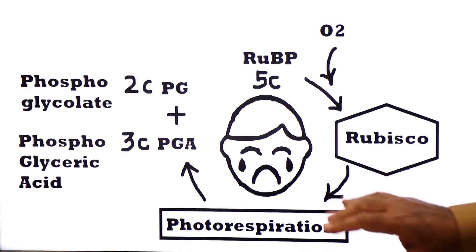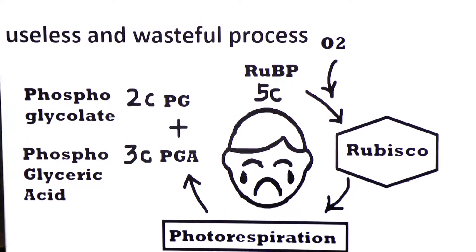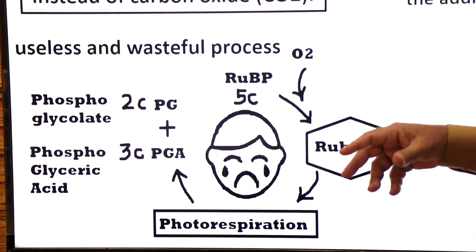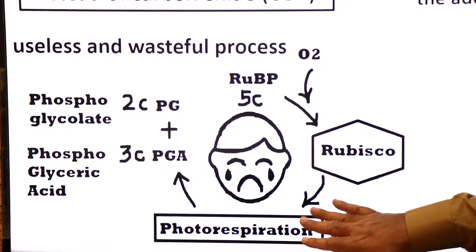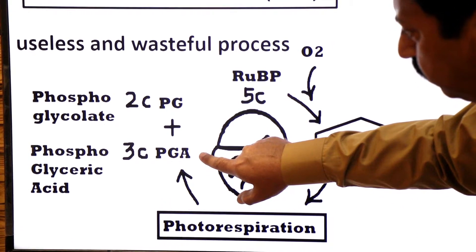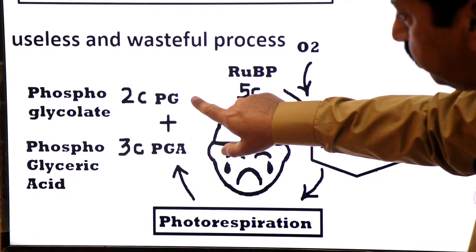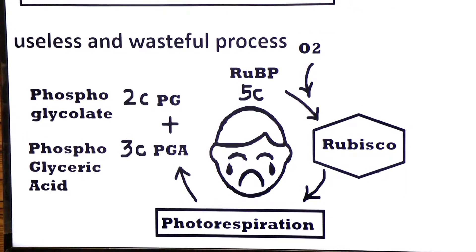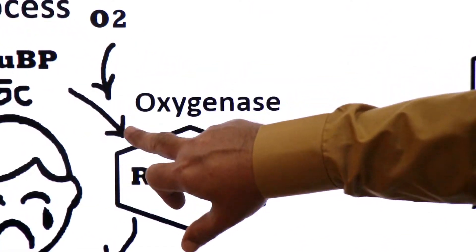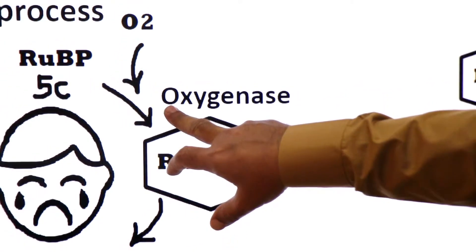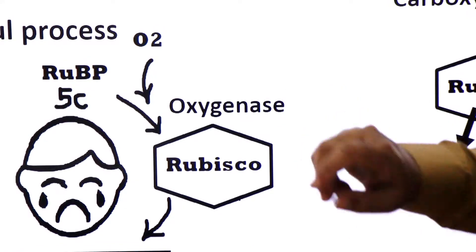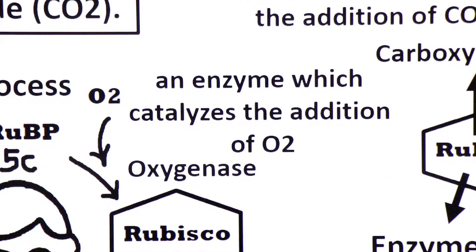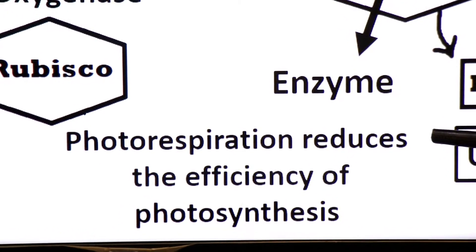When oxygen levels rise, the same Rubisco adds oxygen to ribulose bisphosphate instead of carbon dioxide, and a wasteful process called photorespiration starts. The plant is unhappy because this results in the production of a 3-carbon compound PGA (phosphoglyceric acid) and phosphoglycolate, but no glucose. Photosynthetic efficiency is reduced.